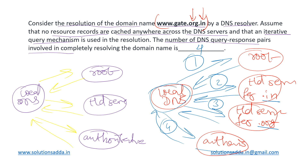For the given domain name, we need four request-response pairs to completely resolve it. If there had been just .org and not the extra .in domain attached, we would have only needed three pairs using the standard approach. But since two different top-level domain servers are required here, the correct answer is four.